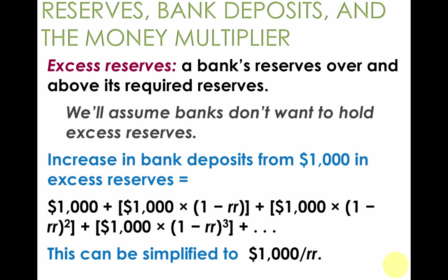The size of the money multiplier can be summed up as simply 1 over the required reserve ratio. Assuming that banks want to be fully loaned up — that is, loaning the maximum they're allowed to under law — they'll have zero excess reserves, which would be reserves over and above the required reserves.